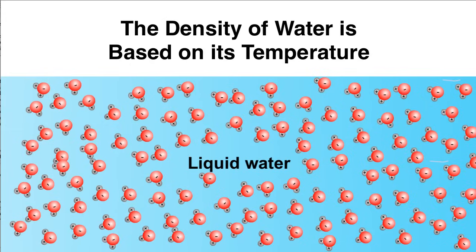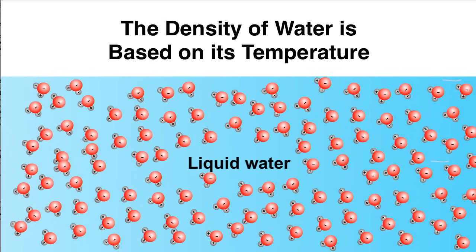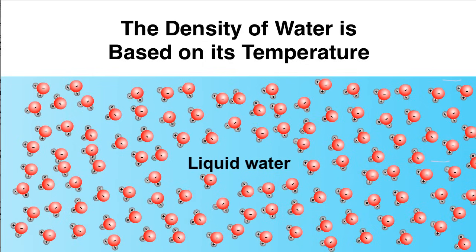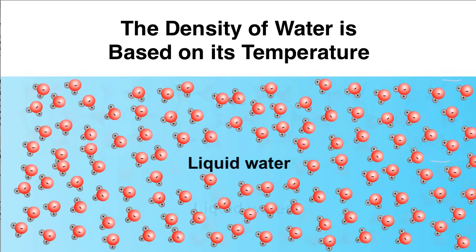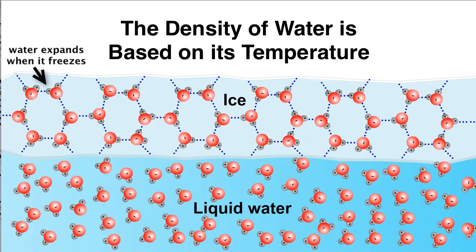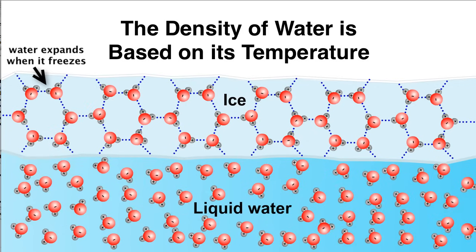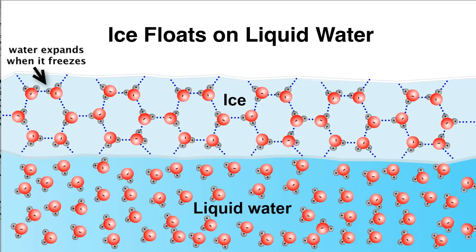And finally, the density of water is based on its temperature. Unlike many other compounds which contract when they freeze, the configuration of the hydrogen bonds in water causes it to expand when it freezes. This expansion causes ice to have a lower density than liquid water, and therefore ice floats on liquid water.